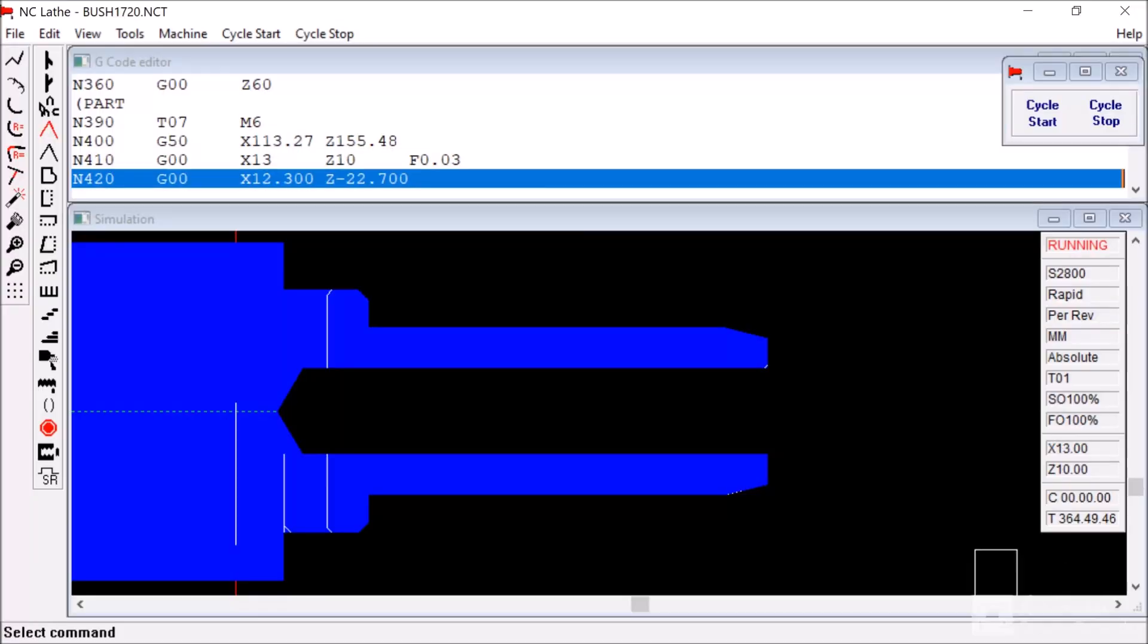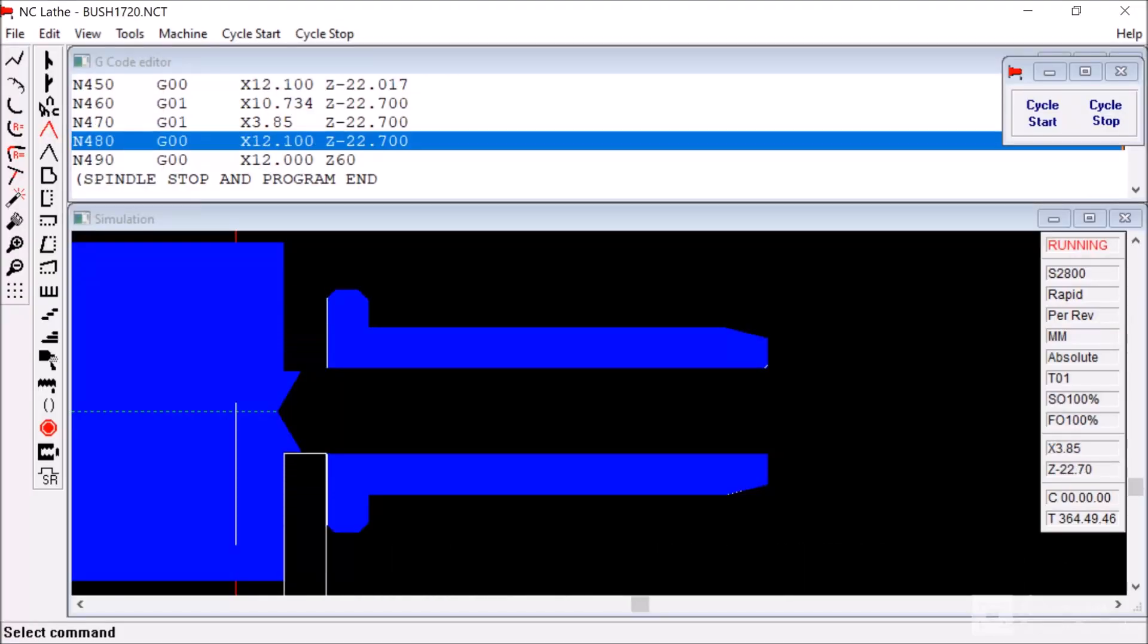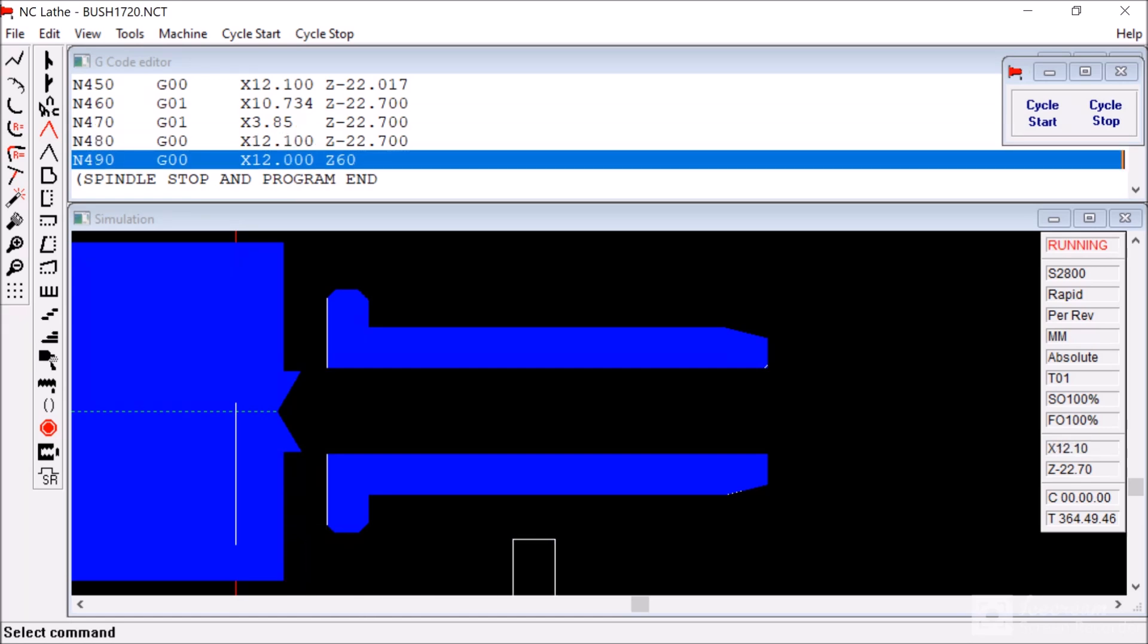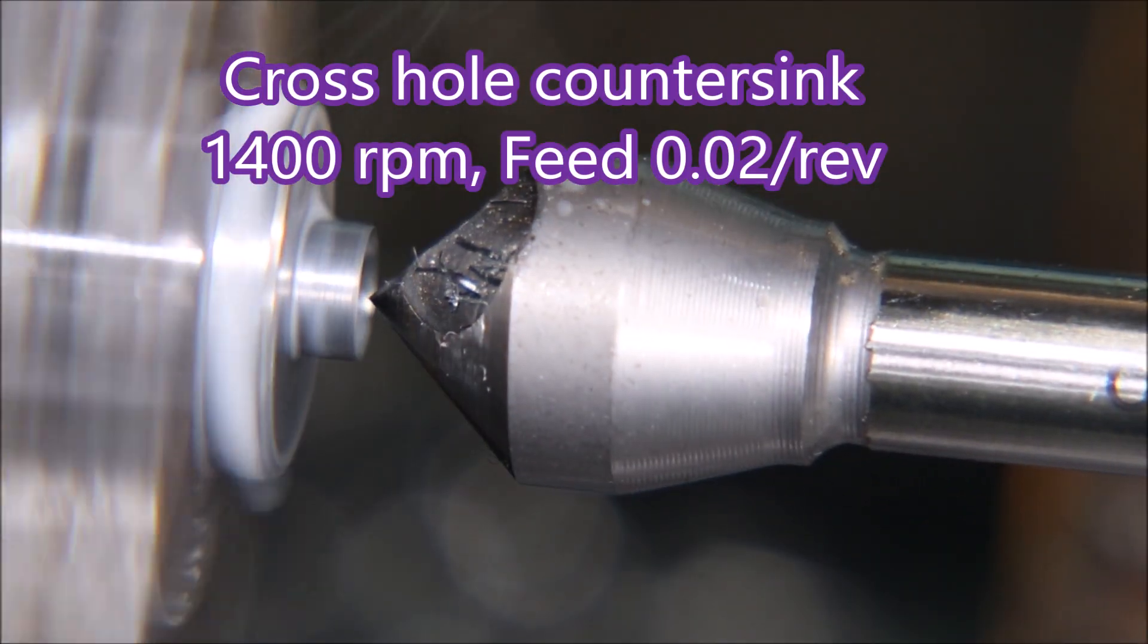Shorts are appealing because there's not much work that has to go into them apart from making sure they're a minute long. At the end of this video, I'm using a cross hole countersink to make quite a deep countersink. They're not very good for production. If you know of one that suits the production process better, could you let me know in the comments?